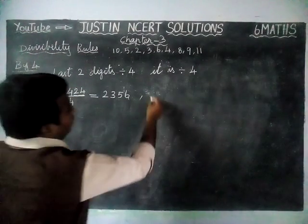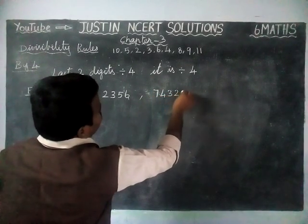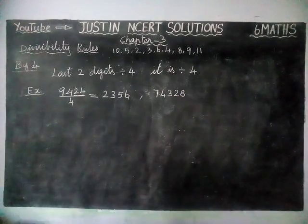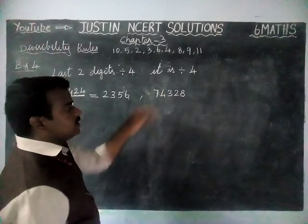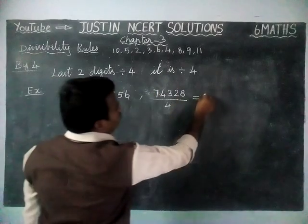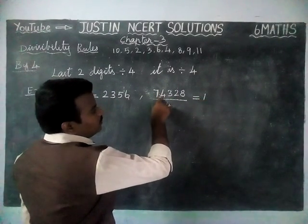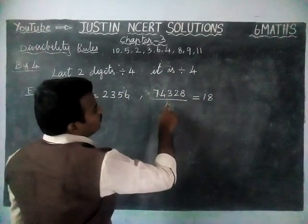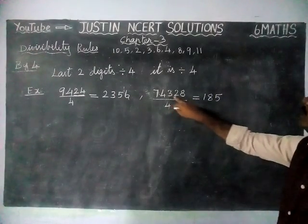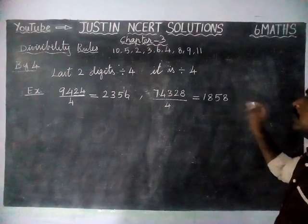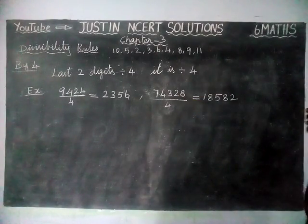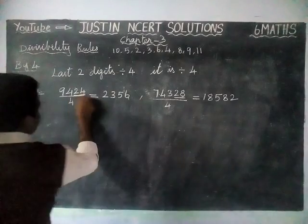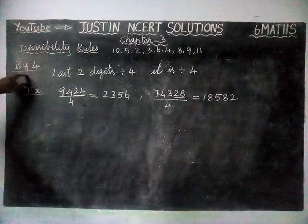Let's take another example: 74328. The last two digits are 28, which is divisible by 4. We verify: in 7 we have one 4 remainder 3; in 34 we have eight 4's making 32 remainder 2; in 23 we have five 4's making 20 remainder 3; in 32 we have eight 4's making 32; then 2×4 are 8. So 74328 ÷ 4 = 18,582. If the last two digits are divisible by 4, then the whole number is divisible by 4 — that is the divisibility rule.